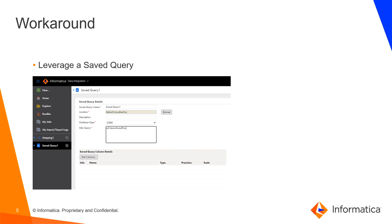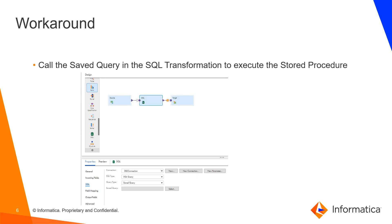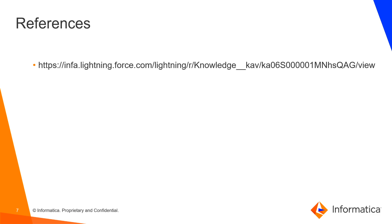To remediate this limitation, the workaround we recommend is using a saved query as an alternative for calling a stored procedure. In the saved query, create a saved query and within it, call the stored procedure. Then from your SQL transformation, under the query type, select the saved query. You should then be able to execute the saved query, which in turn calls the stored procedure.